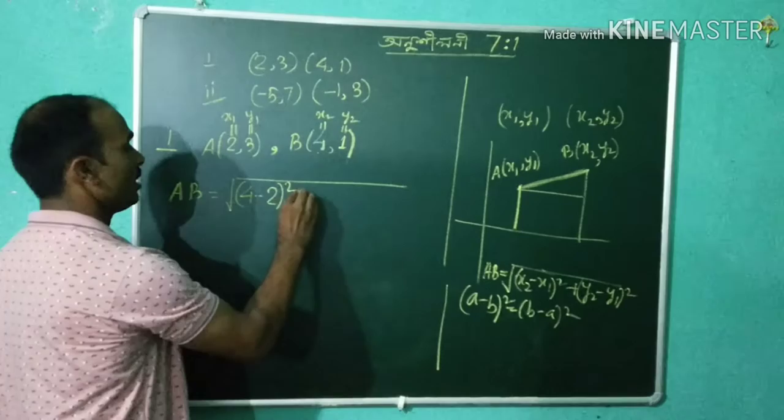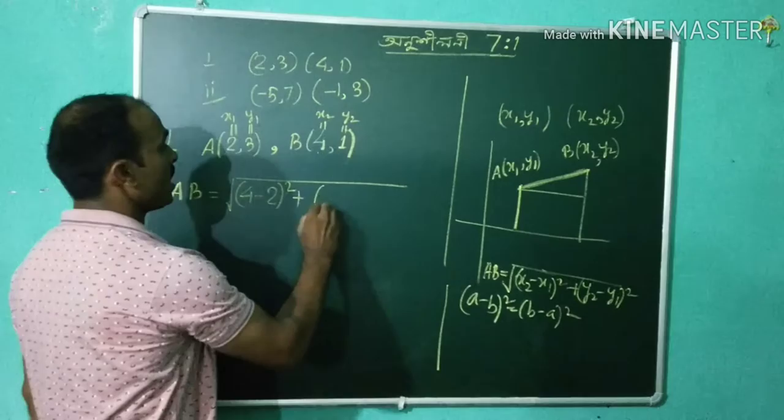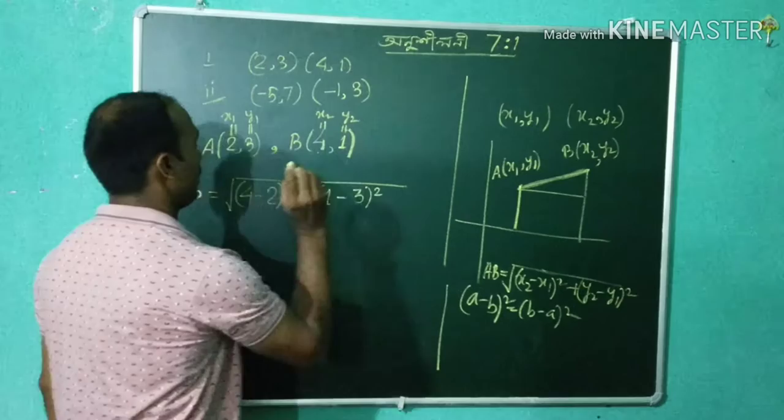We calculate: (4 minus 2) whole square plus (1 minus 3) whole square, giving us (x2 minus x1) whole square plus (y2 minus y1) whole square.